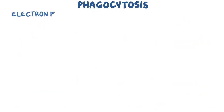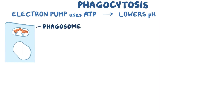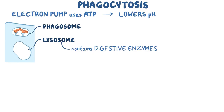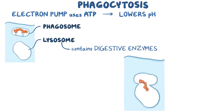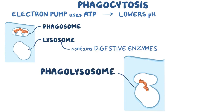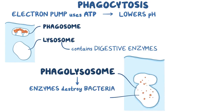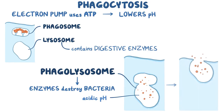During this step, an electron pump uses ATP to pump protons into the phagosome, lowering the pH inside. In the cytoplasm, the phagosome encounters an organelle called a lysosome, which contains digestive enzymes. The lysosome and the phagosome fuse together, merging their contents, forming a structure known as the phagolysosome. Inside the phagolysosome, lysosomal enzymes start destroying the bacteria with the help of an acidic pH. After it's all over, the lysosome heads over to the cell membrane to expel the leftovers out into the extracellular space, like a cellular burp.